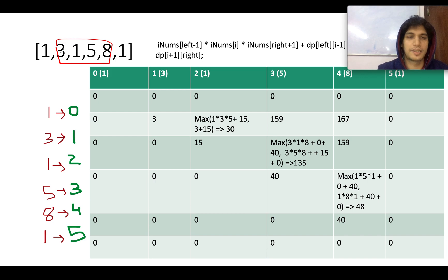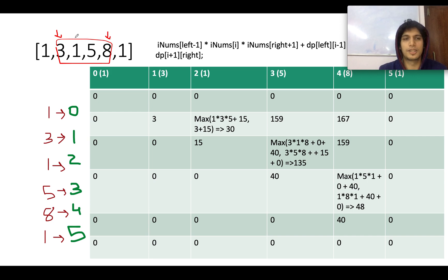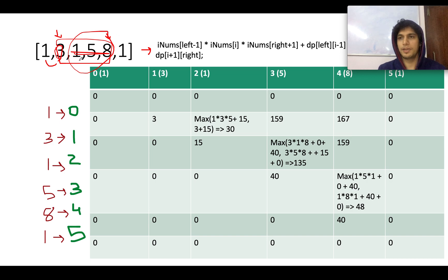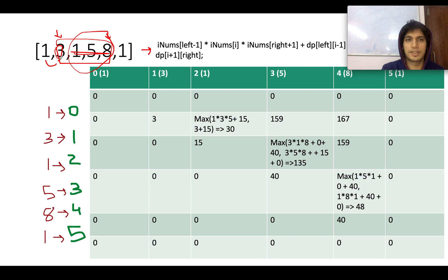For example, if you are interested in the maximum profit for a particular window, you iterate through all positions from left to right within that window. At any point, you calculate the profit using the formula: you assume that if you are bursting the current balloon i, all other balloons in the window are already bursted. So one part of the profit is nums[left-1] * nums[i] * nums[right+1], and the other part is the DP of the already-computed smaller subsets on either side.